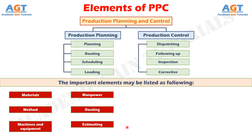Element No. 6: Estimating. This involves establishing operation times leading to fixation of performance standards for both workers and machines. Estimating involves deciding the quantity of product which needs to be produced and the cost involved in it on the basis of sales forecast. Estimating manpower, machine capacity and material required to meet the planned production targets are key activities before budgeting for resources.